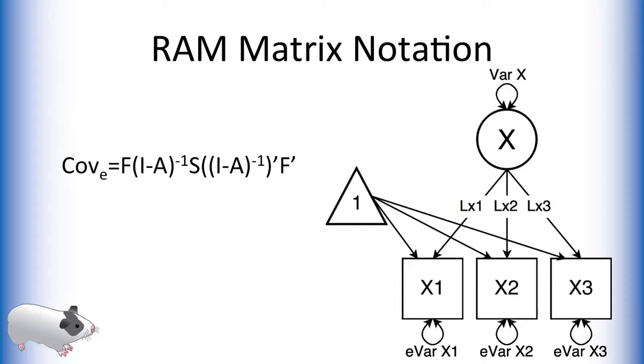On the right you see a path model for a simple factor analysis. On the left is the RAMPATH matrix algebra for recreating the expected covariance of data given this model. The goal of a structural equation model is to create an expected covariance matrix that best resembles the covariance matrix of the real data.